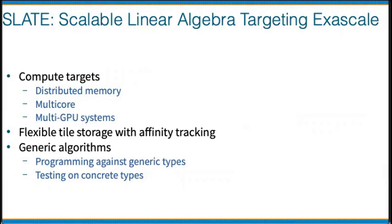Another library that relies on OpenMP support for portability is SLATE — Scalable Linear Algebra Targeting Exascale. It has multiple targets selectable at compilation: full support for distributed memory, multi-core CPUs, and multi-GPU systems. Storage in SLATE is very flexible and allows affinity tracking, so at any given time SLATE knows how a portion of a matrix is laid out and exactly where it's located — whether on the GPU, the CPU, or on both because a copy has not yet been disposed of.